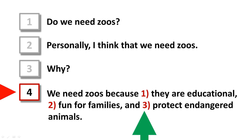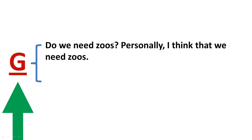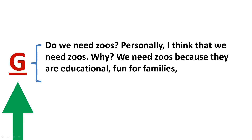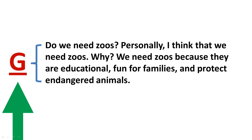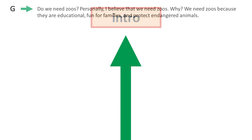When I put it all together, my advanced general statement looks like this: 'Do we need zoos? Personally, I think that we need zoos. Why? We need zoos because they are educational, fun for families, and protect endangered animals.' This general statement is the introduction to my advanced essay.